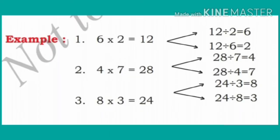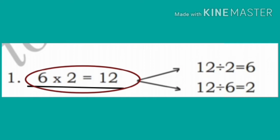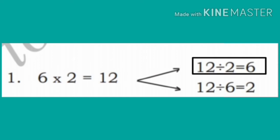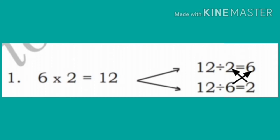Observe more examples, children. In the first example, the given multiplication form is 6 into 2 is equal to 12. Here we write the division form. 12 divided by 2 is equal to 6, and 12 divided by 6 is equal to 2. When we write the division form, we interchange the divisor and quotient.